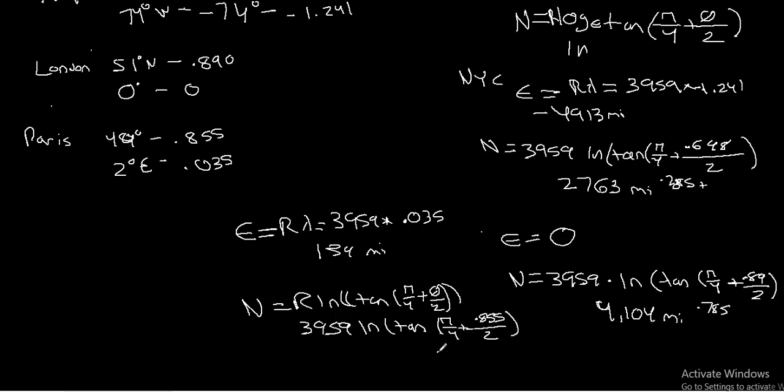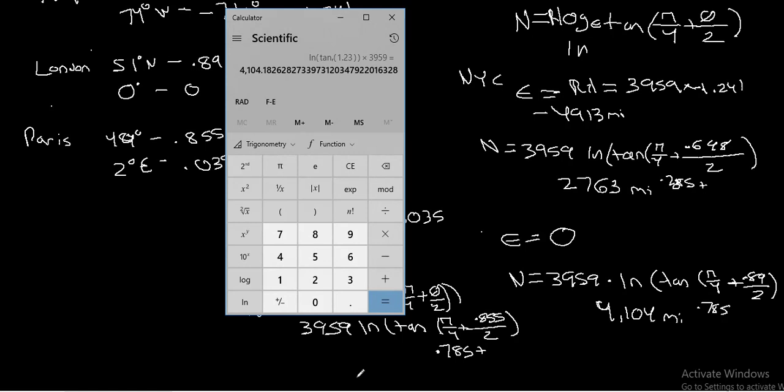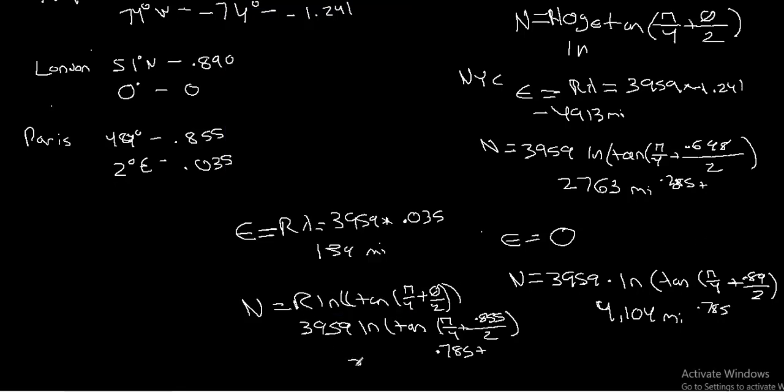So we know that the pi over 4, again, that value is constant of 0.785. And then we know that our value here is going to be, with our calculator here, 0.855 divided by 2 is 0.4275. We add the 0.785 to that. So this is our value in radians. So we can take the tangent of that, and then we take the natural log of that, and then we multiply by 3,959 to get a value of 3,889. So this is going to be 3,889 miles.